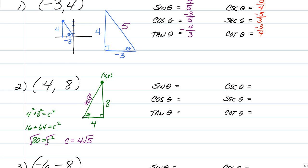Here's something you need to know: the hypotenuse is always positive. No matter where you're at, the hypotenuse is positive. Do not give me a decimal. So now we get to state our sine, cosine, and tangent, and you're going to have more radical rules that you're going to have to remember.